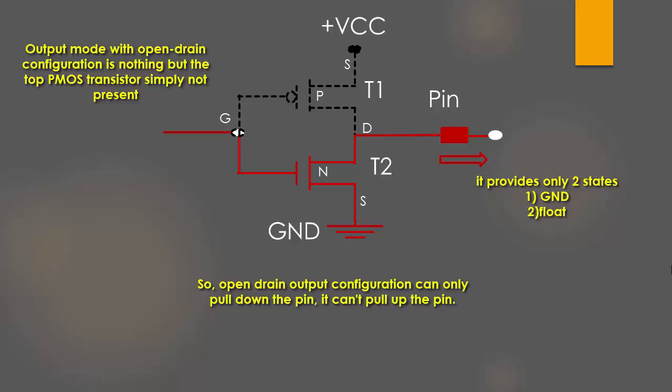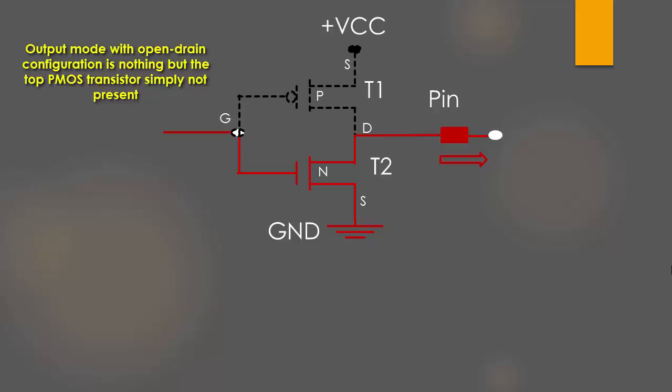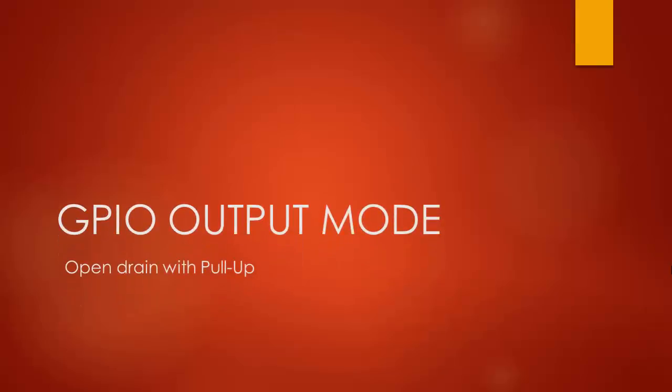The open drain output is useless until you provide the pull-up capability by introducing a pull-up resistor, either by activating an internal pull-up or external pull-up resistor. So without the pull-up resistor applied to open drain, this mode is completely useless. So that leads to our next discussion: open drain with pull-up resistor.